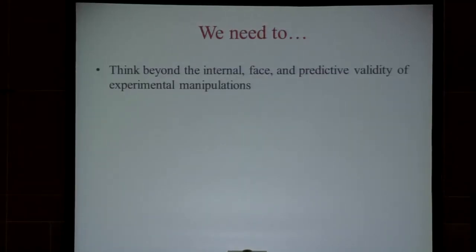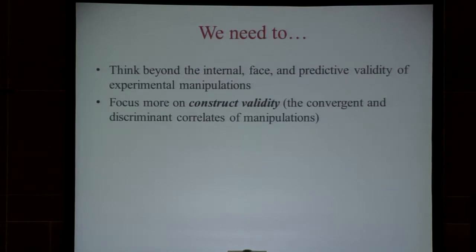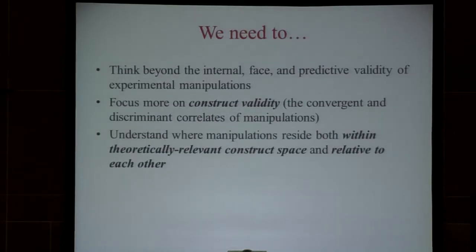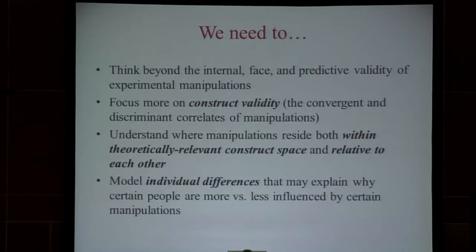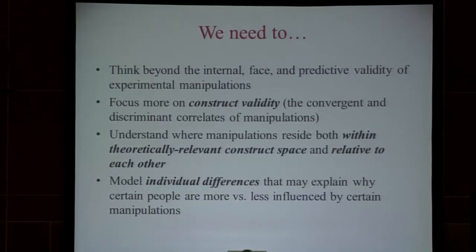When you don't know that, you have a science where replication becomes a lot more difficult. In summary, I would argue that we need to do four things: think beyond the internal, face, and predictive validity of our experimental manipulations; focus more on their construct validation properties — their convergent and discriminant correlates in particular; understand where manipulations reside within theoretically relevant construct space, be it the interpersonal circumplex or the two-dimensional model of emotions or whatever is relevant to your field; and pay a lot more attention to modeling individual differences that may explain why certain people are more versus less impacted by certain manipulations in our studies.